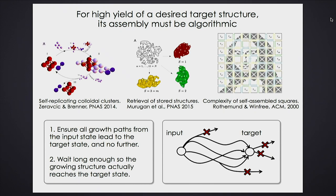You take a system in some input state — a bunch of building blocks floating around in a fluid — and you want to reach a target state where those building blocks are assembled in a desired structure. There are many stochastic pathways by which the building blocks can come together. To make the target in high yield, all paths from the input must lead to the target — none should go away from it.